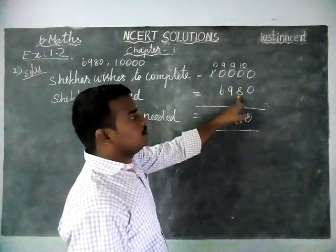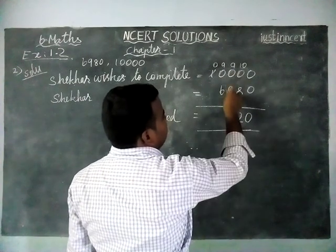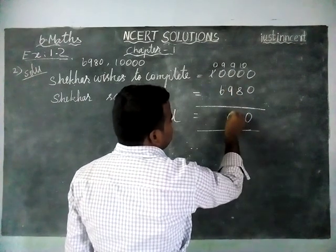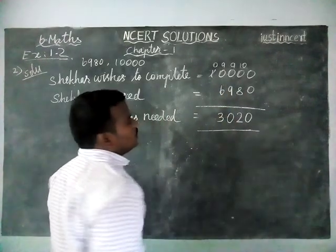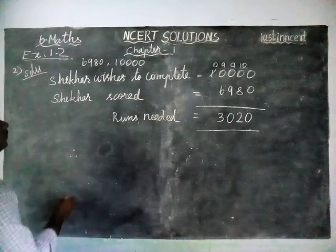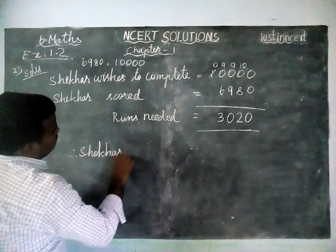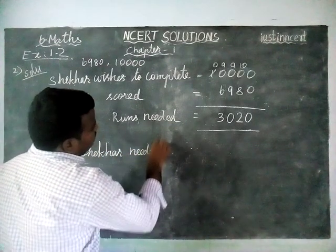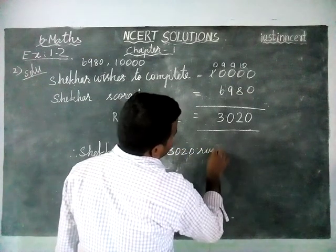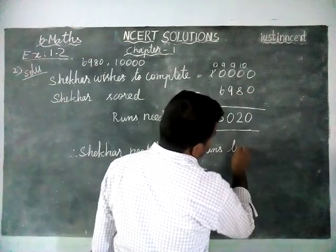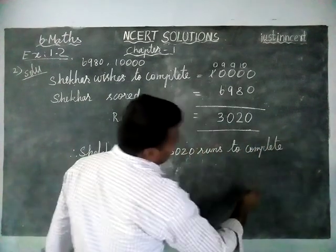Now this is 10. So from 10 we subtract 8: 10 minus 8 equals 2. 9 minus 9 equals 0. 9 minus 6 equals 3. So the answer is 3,020. Therefore, Sagar needs 3,020 to complete 10,000.